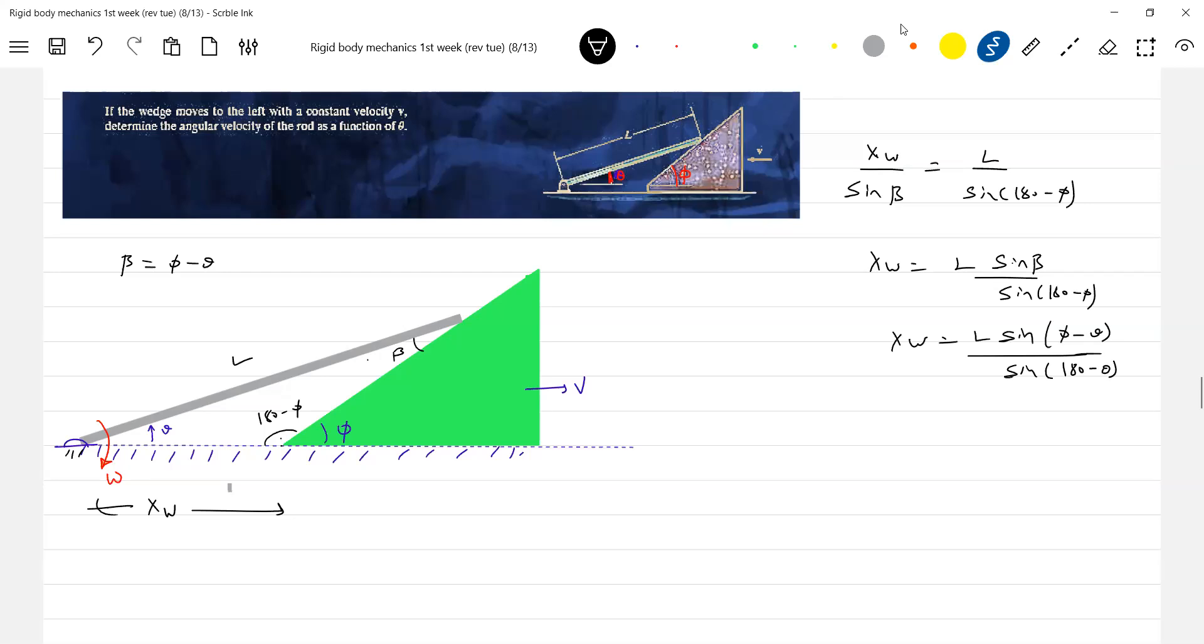For omega, I think the best thing is let me differentiate this. dx_w/dt is equal to... Now what is omega, from where to bring omega?